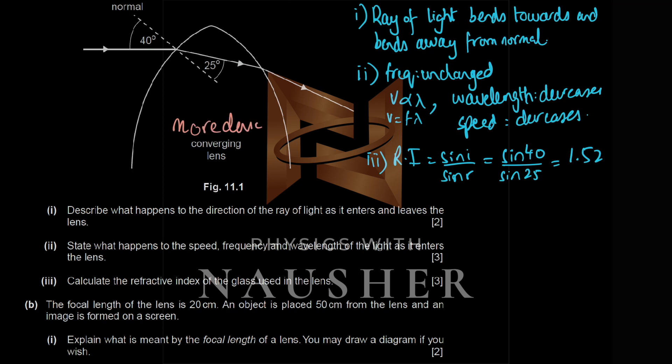Refractive index is given by sine i over sine r — always the sine of the larger angle over the smaller angle. Sine 40 over sine 25 gives a refractive index of 1.52.